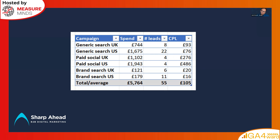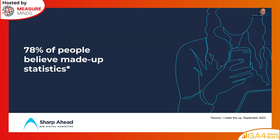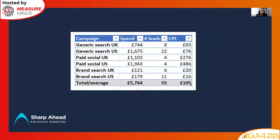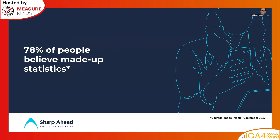There is a big problem with this type of report, illustrated by this slide: '78% of people believe made-up statistics.' I just made that up. This is an example of a cognitive bias called the illusory truth bias.